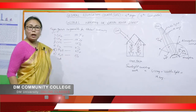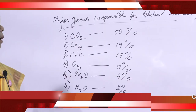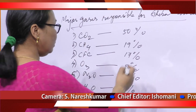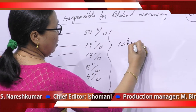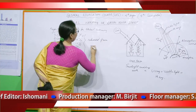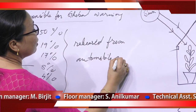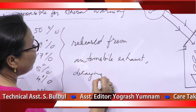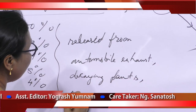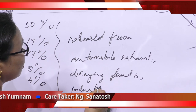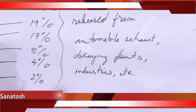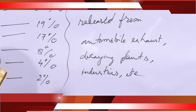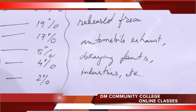These gases are released from automobile exhaust, decay of plants, industries, incomplete combustion of fossil fuels, industrial smoke, and release of halons and halogenated gases from the operation and maintenance of propellants, coolants, and fire extinguishers.